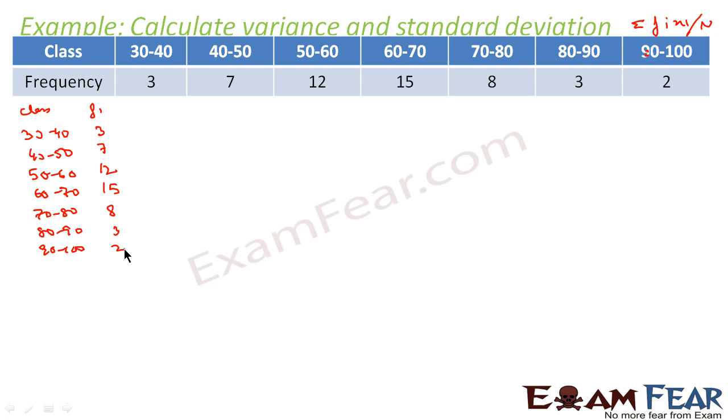To find xi, we take the mean of the lower and upper limits of each class. 30 plus 40 by 2 is 35. 40 plus 50 by 2 is 45. 50 plus 60 by 2 is 55. 60 plus 70 by 2 is 65. 70 plus 80 by 2 is 75. 80 plus 90 by 2 is 85. 90 plus 100 by 2 is 95.